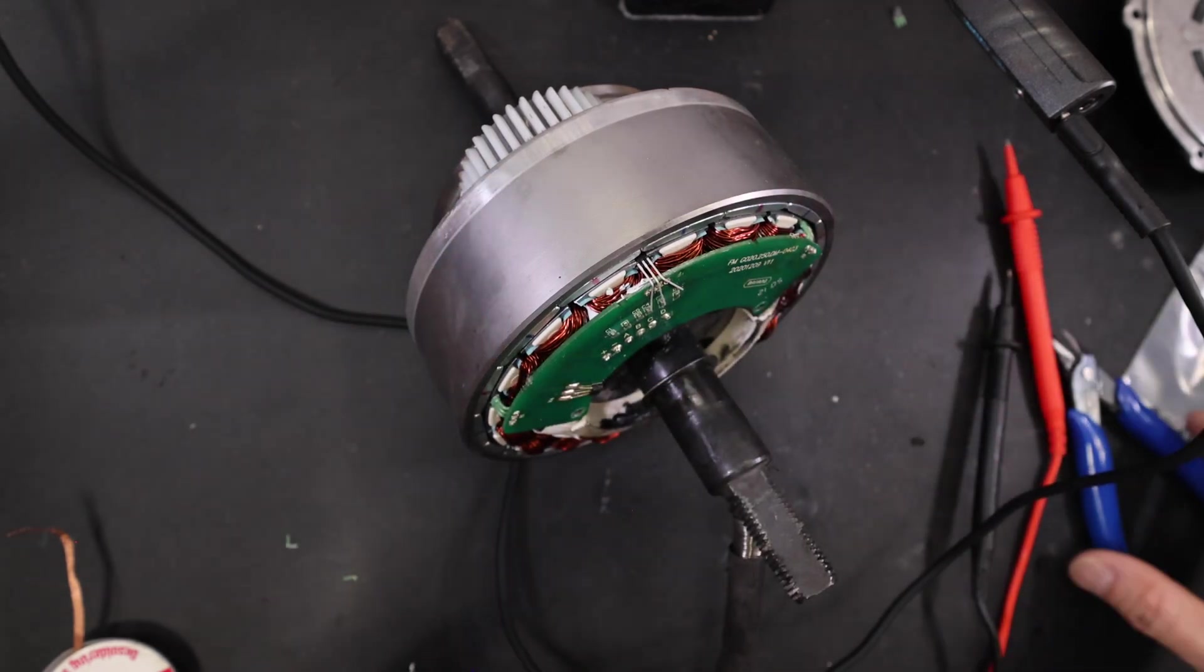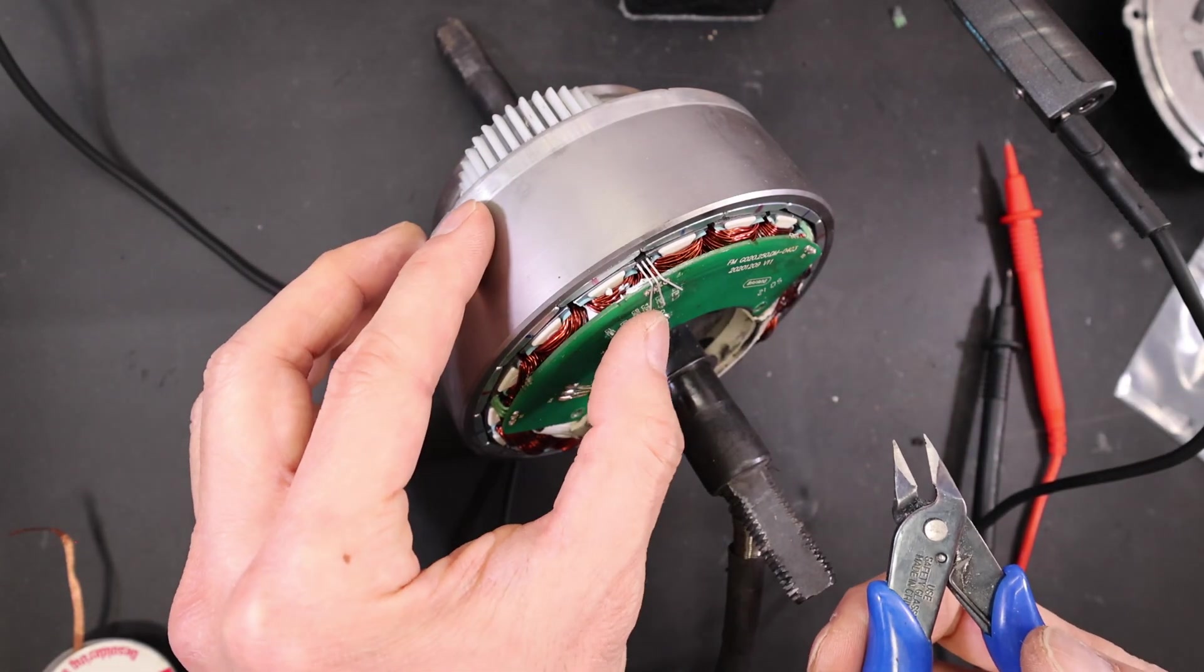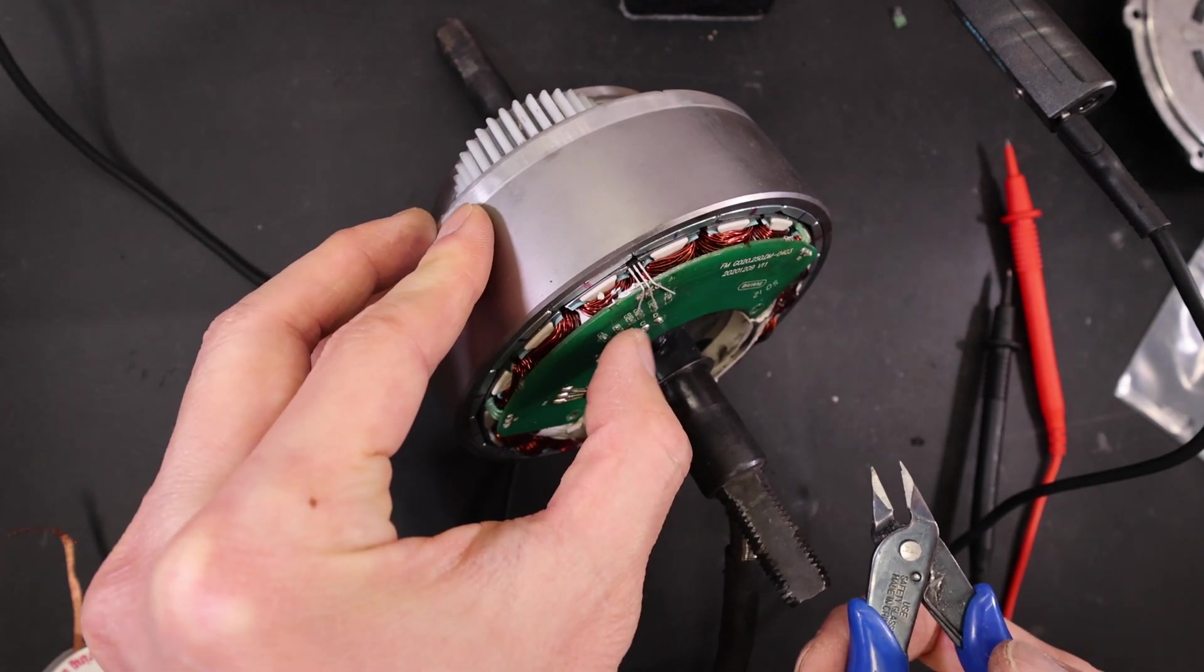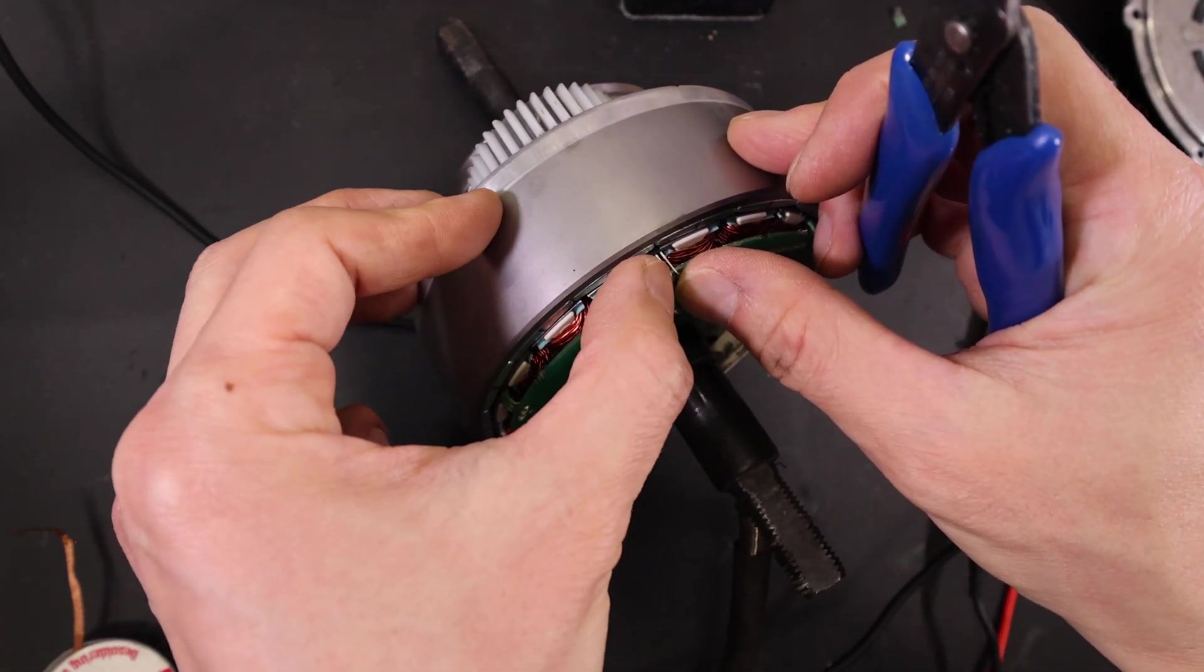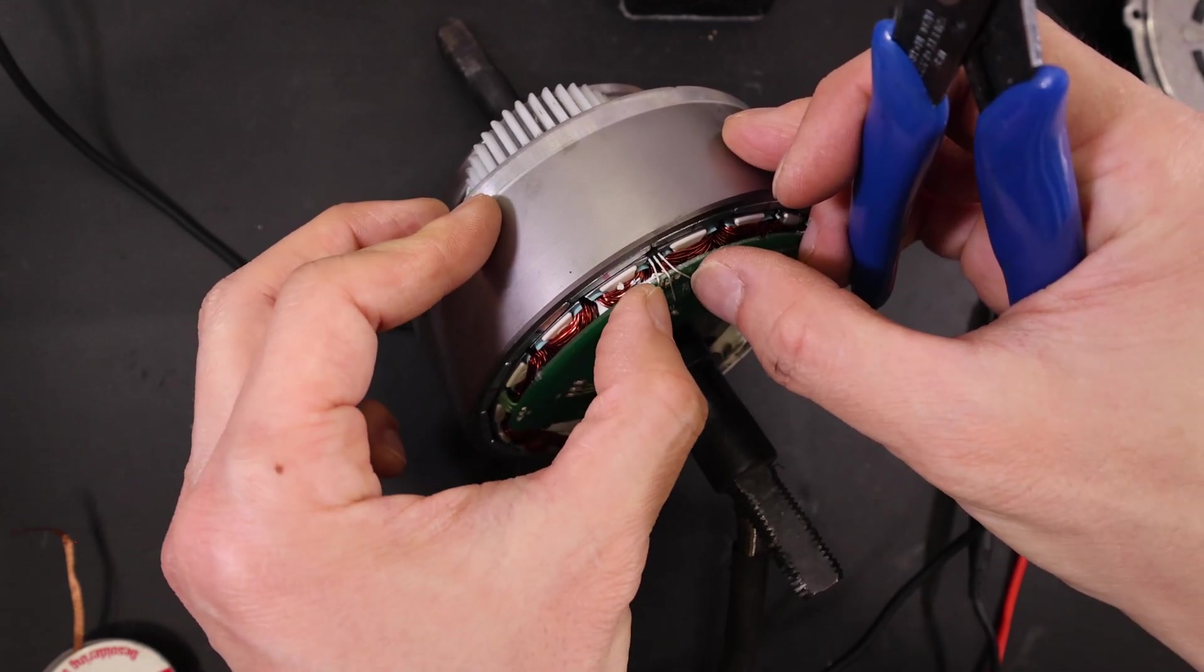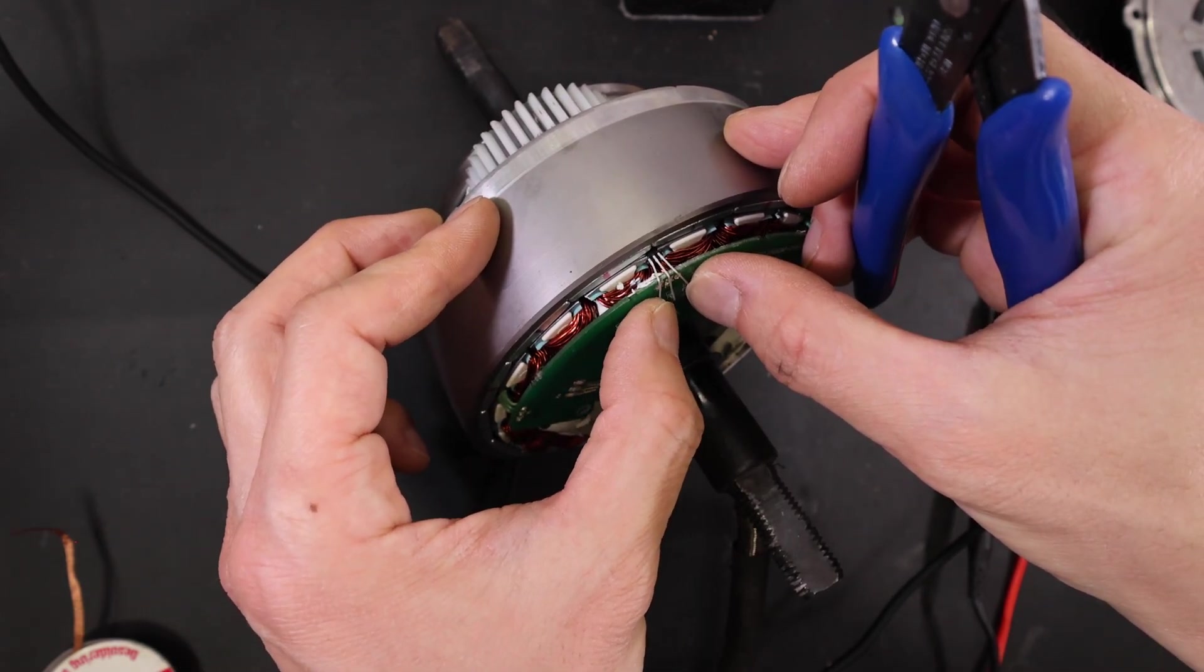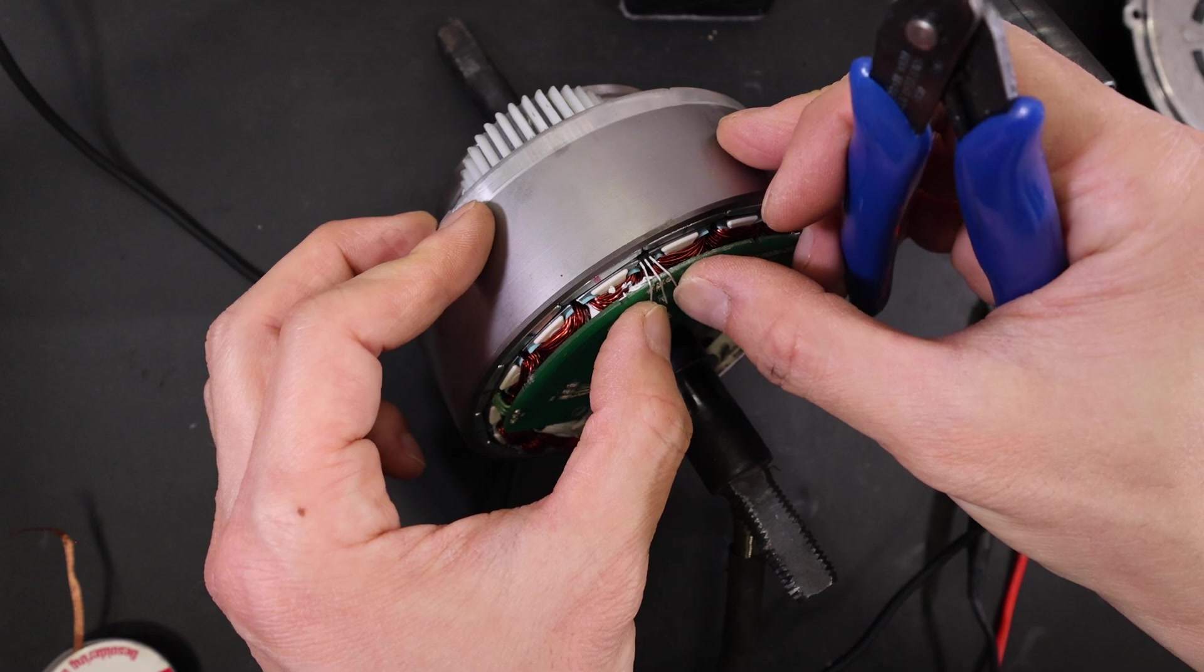But I could always just pop the motor open and replace whichever one goes in the future. But these Honeywells are supposedly better in a way that they handle more heat. They're higher operating temperatures. So if you do decide to open up the motor, you might want to do all three. I just decided to do one for now. Not a big deal. Maybe I'll do the other two if one more goes.